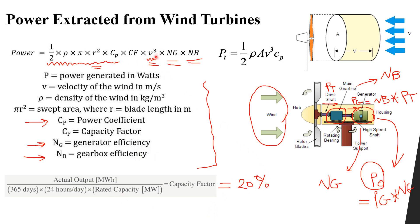That is why we add Cf, the capacity factor, to our equation. The generator efficiency is known from the installed generator, the gearbox efficiency is known from the mechanical system, the air density can be measured, and the rotor radius r is a design value. The only coefficient we cannot easily obtain is Cp, the power coefficient, which represents how much energy is extracted by the wind turbine from the wind. In the next lesson we will learn about Cp and how to get its maximum value.